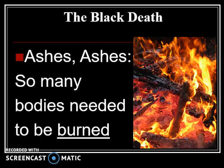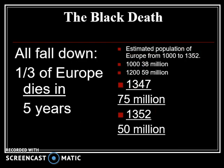Ashes refers to how many bodies needed to be burned because there were too many to bury. And all fall down refers to how many people died. There is an estimated population in Europe between the years 1000 to 1350 of somewhere around 75 million people. After the Bubonic Plague hit, a third of Europe died within just five years — one-third of all of those people.